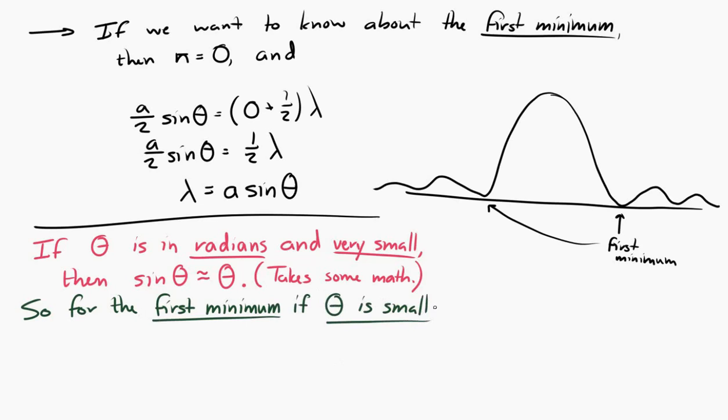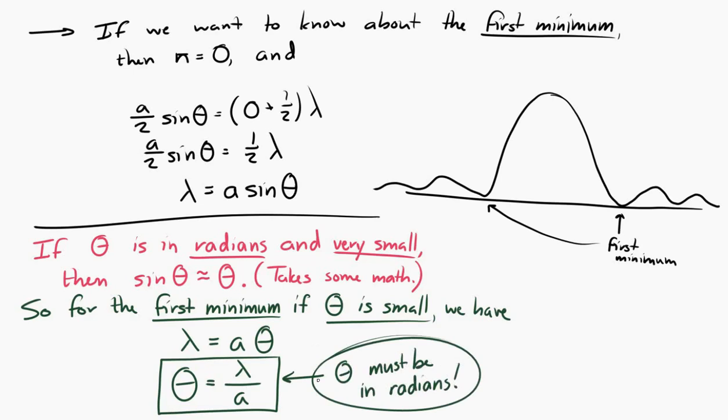So, as long as theta is small and measured in radians, the first minimum would be given by lambda is equal to a theta, or theta is equal to lambda over a. That gives us the angle to the first minimum on the screen.